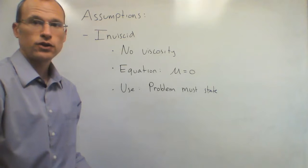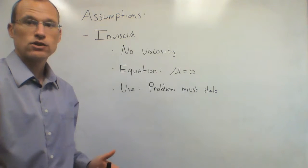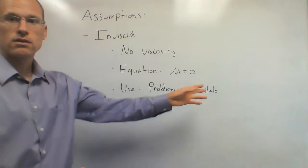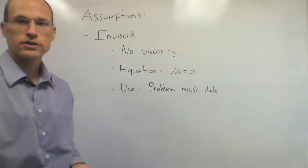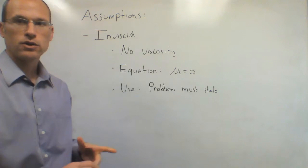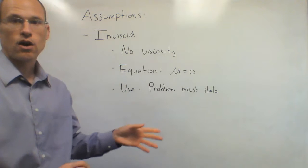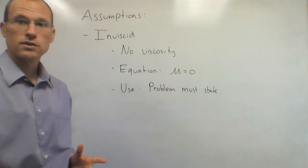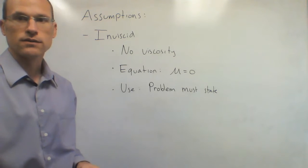The next assumption is if the fluid is inviscid, meaning it has zero viscosity — mu equals zero. The last term on the right-hand side of all the Navier-Stokes equations is mu times a bunch of second derivatives. If mu equals zero, all of that goes away. The only time you can use this assumption is if the problem explicitly tells you the fluid is inviscid.